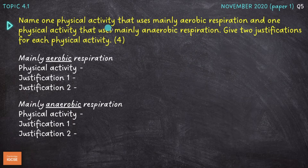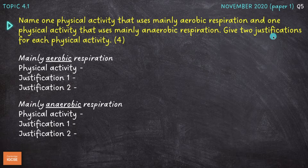Name one physical activity that uses mainly aerobic respiration, and one physical activity that uses mainly anaerobic respiration. That's a really easy part of the question, but then we need to give two justifications for each physical activity, and it's worth four marks. That's where the difficulty comes in here.